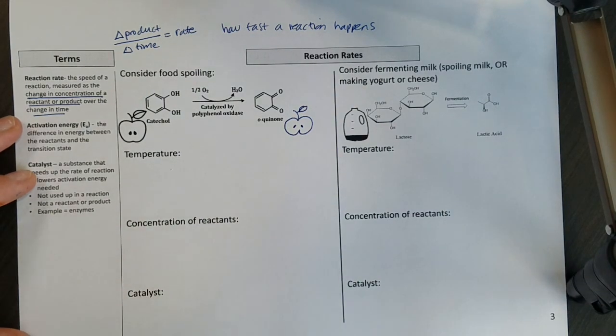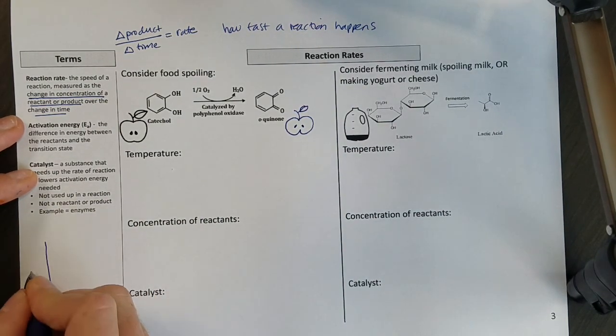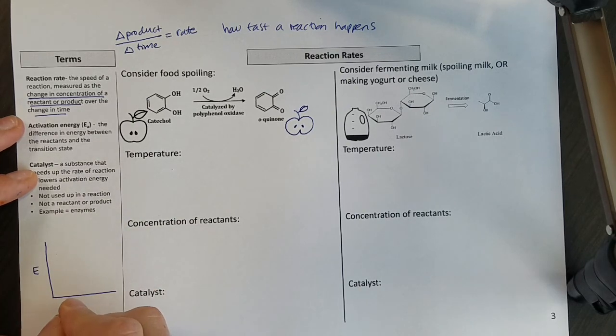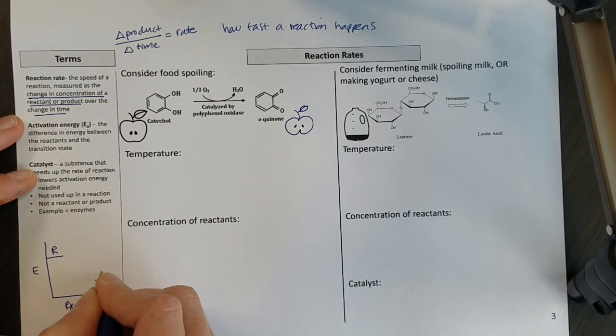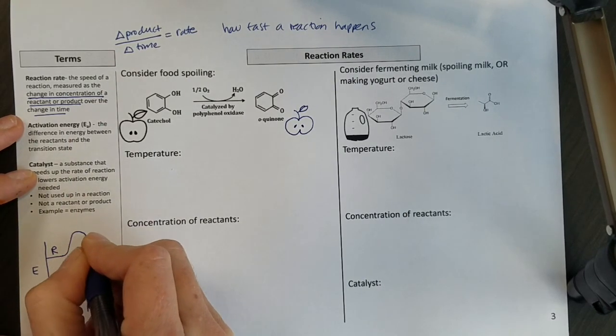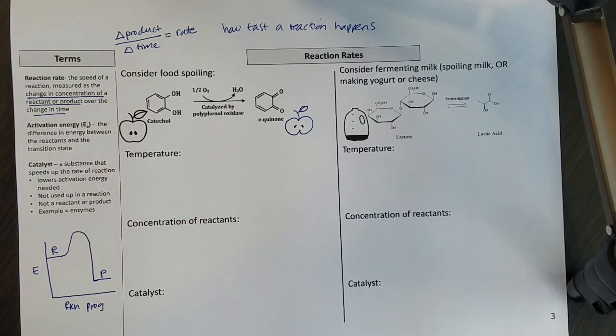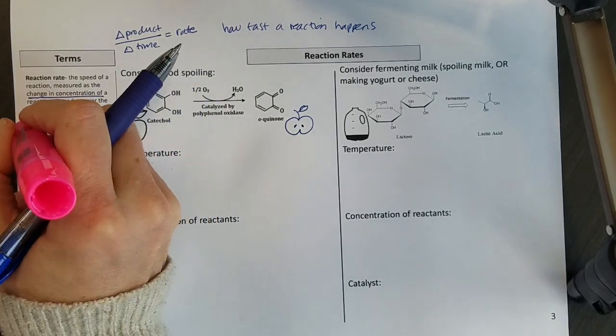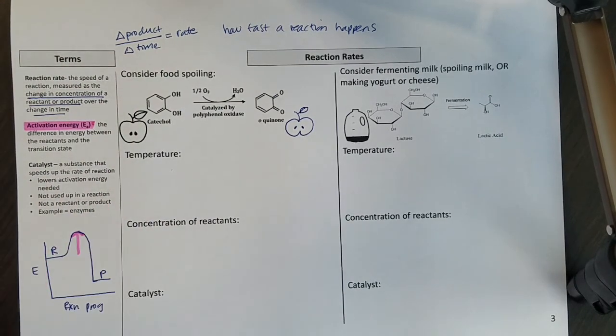We've got that definition. Another thing we want to remember is what an energy diagram looks like. So if we have energy and then we have reaction progress, we have reactants, we have products, we have some activation energy, and our activation energy is the energy from reactants up to that transition state.